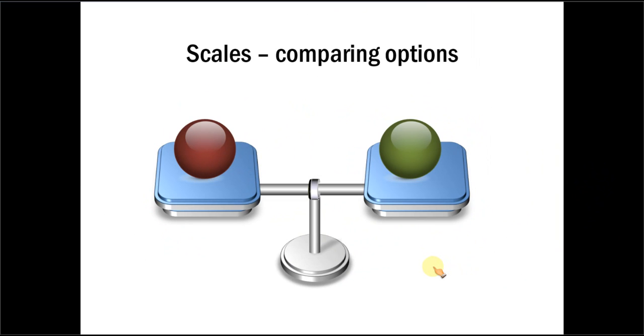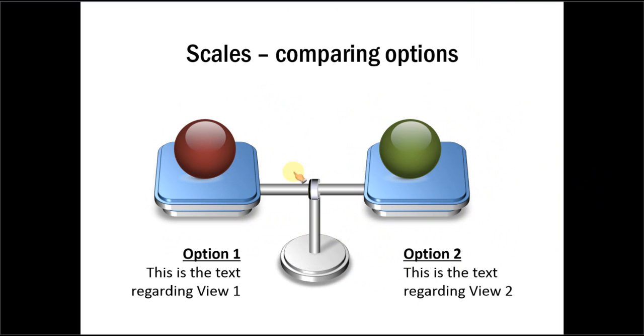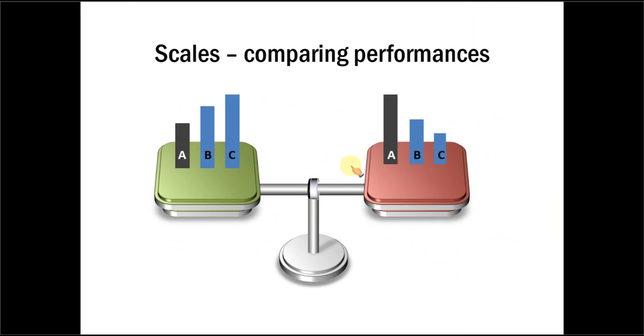Let me show you an alternative to the scales diagram. Here you can see that this can be used as a way to compare options. Option one and option two can be here. Instead of just options, you can also compare performance of two quarters. Maybe the first quarter here, the second quarter. You can have the text coming here on click.